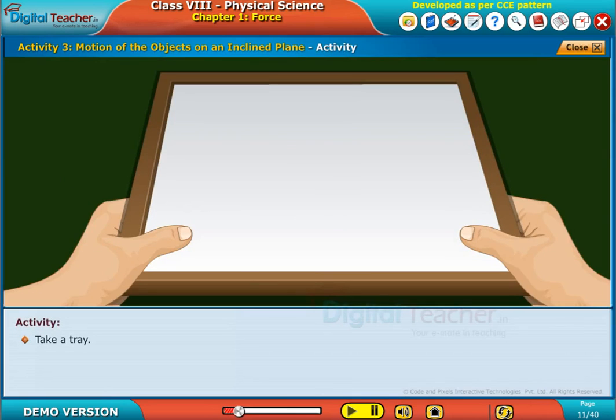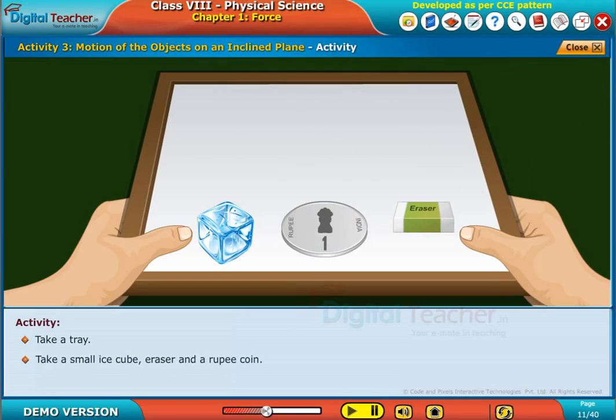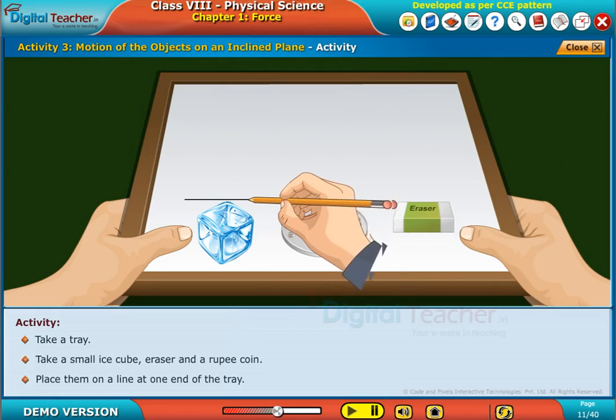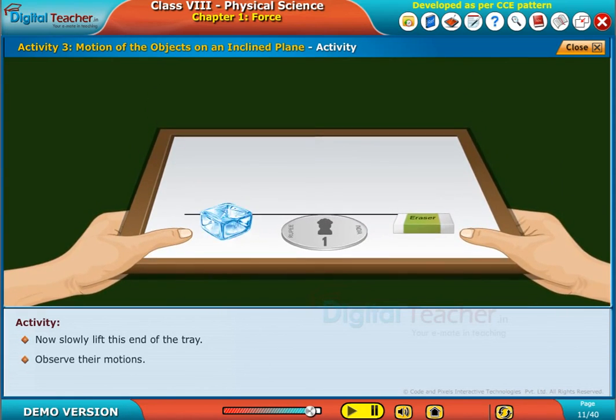Take a tray. Take a small ice cube, an eraser, and a rupee coin. Place them on a line at one end of the tray. Now, slowly lift this end of the tray and observe their motions.